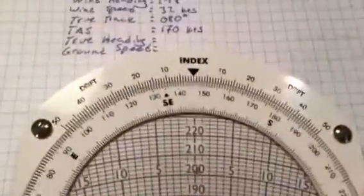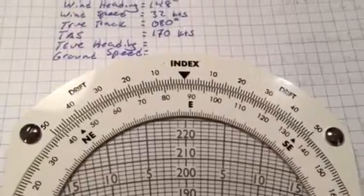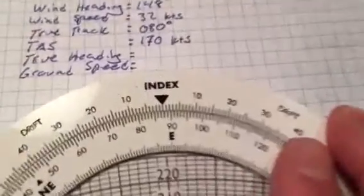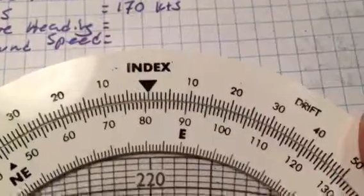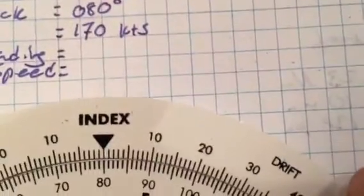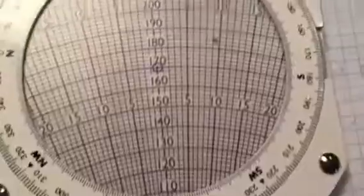Now we plot the true track, which happens to be 80 degrees. Let's pull this back down to 80 to get as close as possible—80, there we go.